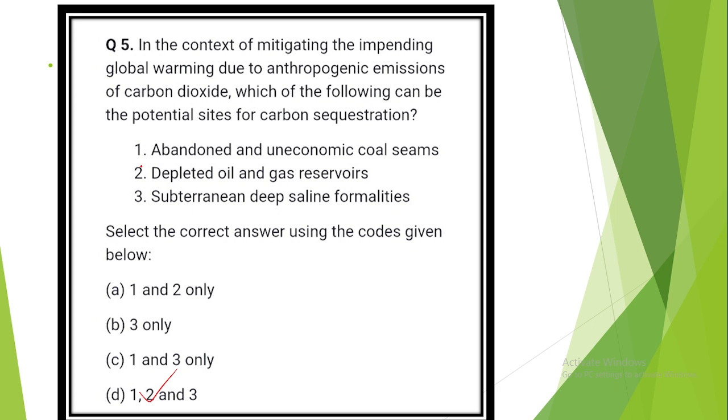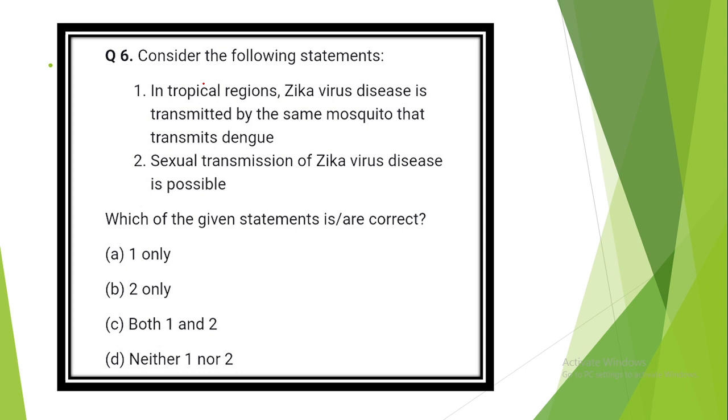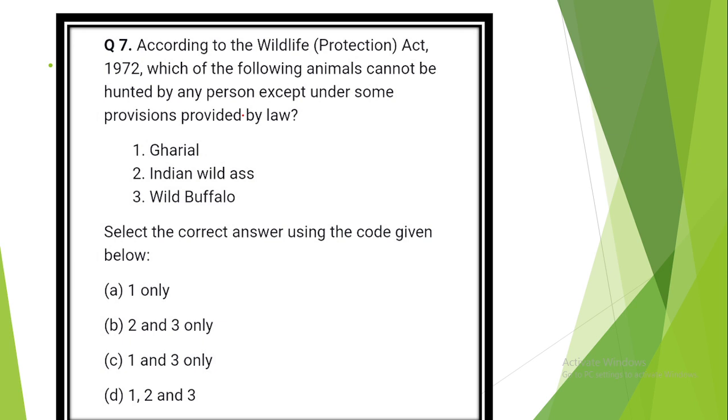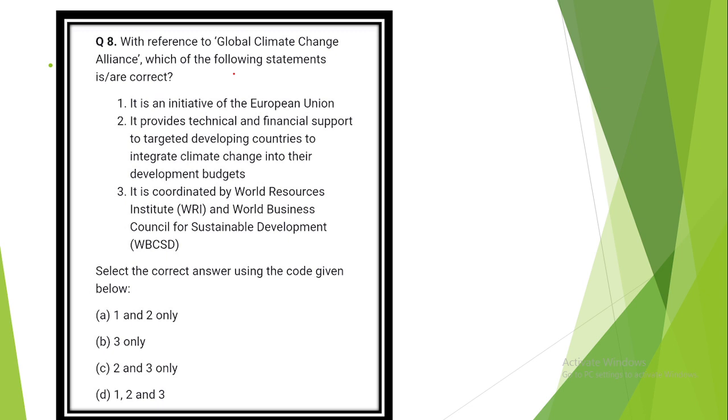Question number 3. Due to some reasons, if there is a huge fall in population of species of butterflies, what could be likely consequences? The answer is option C: 1 and 3. Pollination of some plants could be adversely affected. It could lead to a fall in the population of some species of spiders and birds. Question number 4. It is possible to produce algae-based biofuels, but what is or are the likely limitations of developing countries in promoting this industry? Answer is option B. Setting up an algae-based biofuel production requires high level of expertise and technology. Economically viable production necessitates setting up large-scale facilities which may raise ecological and social concerns. Question number 5. In the context of mitigating the impending global warming due to anthropogenic emissions of carbon dioxide, which of the following can be potential sites for carbon sequestration? The answer is option D: All statements are correct. Abandoned and uneconomic coal seams, depleted oil and gas reservoirs, subterranean deep saline aquifers.